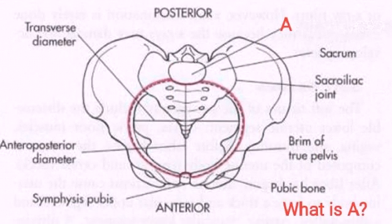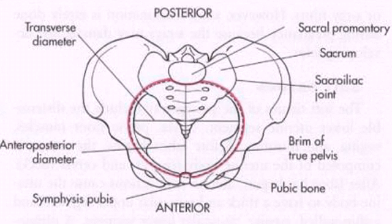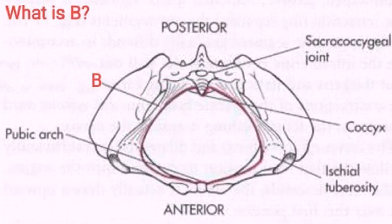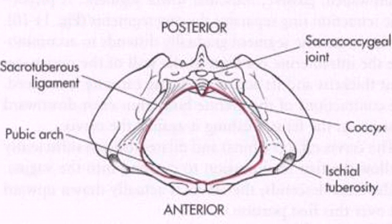What is A? Sacral promontory. What is B? Sacrotuberous ligament.